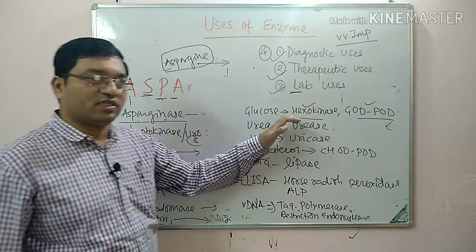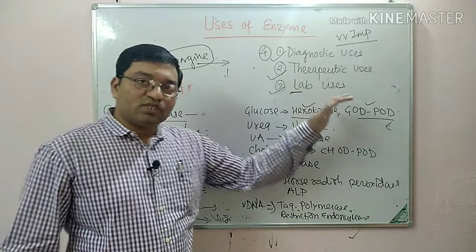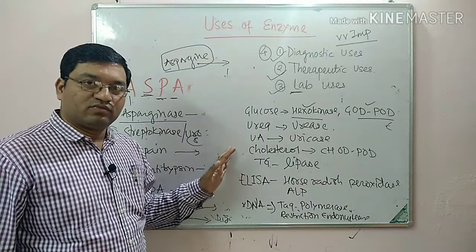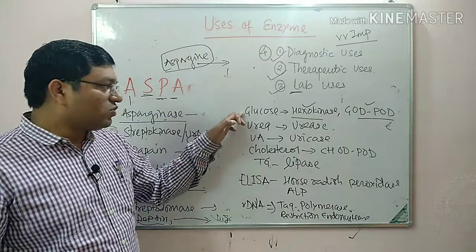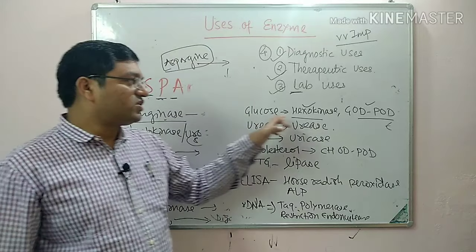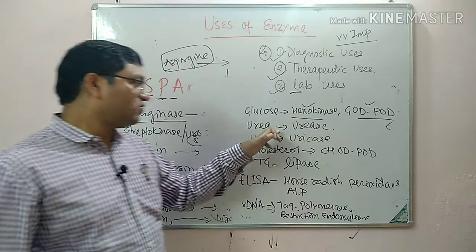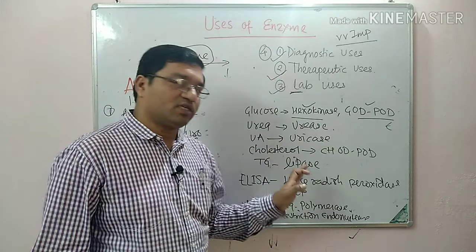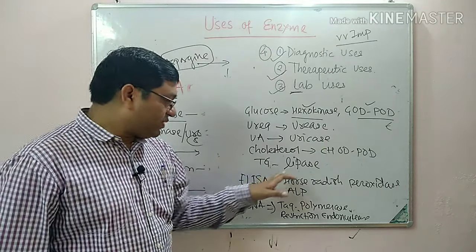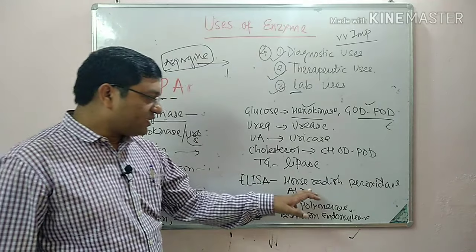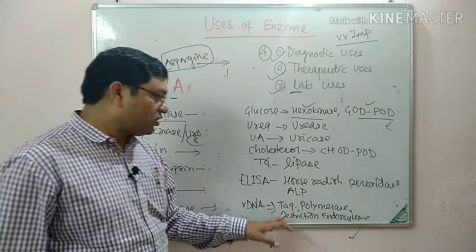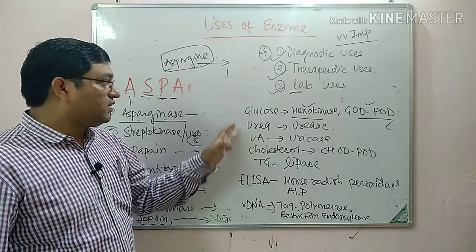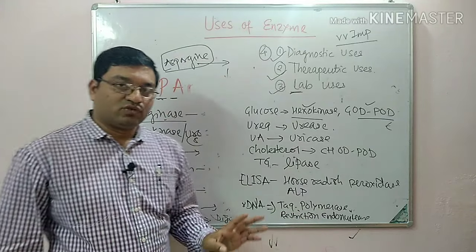Summarizing laboratory uses: glucose oxidase-peroxidase and hexokinase for glucose estimation, urease for urea estimation, uricase for uric acid estimation, cholesterol oxidase-peroxidase for cholesterol, lipase for triglycerides, horseradish peroxidase and alkaline phosphatase for ELISA, and Taq polymerase and restriction endonuclease for molecular biology applications.